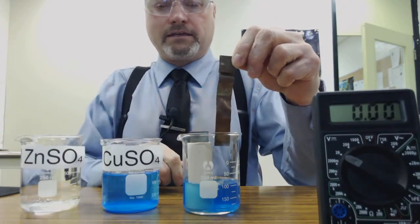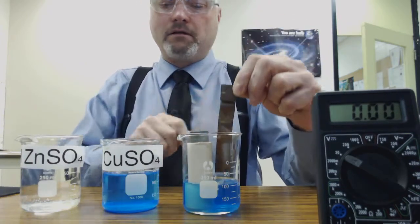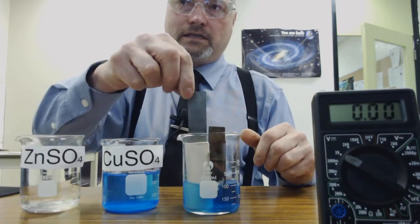When copper gains the electrons it becomes reduced and so reduction is happening at the cathode. Copper will be the cathode, zinc will be the anode.